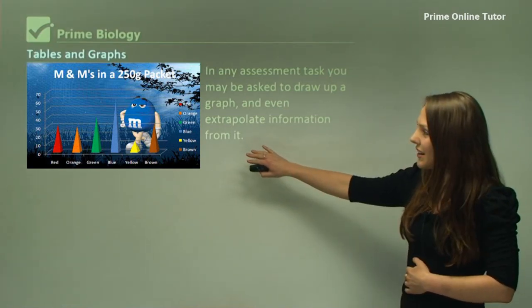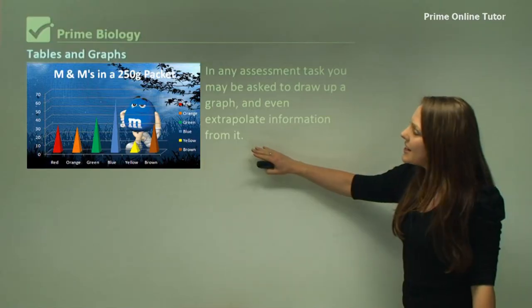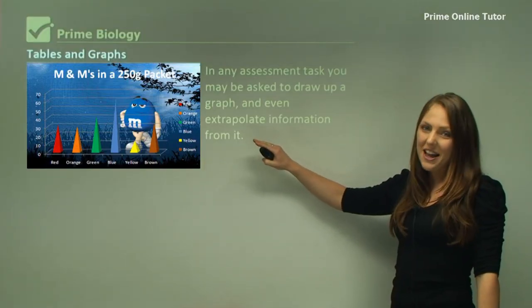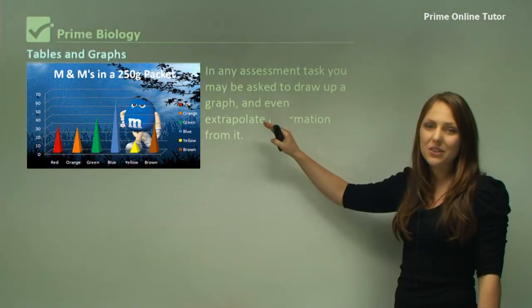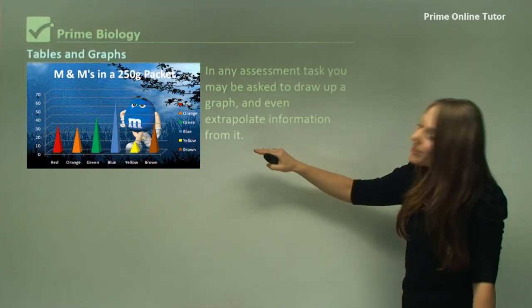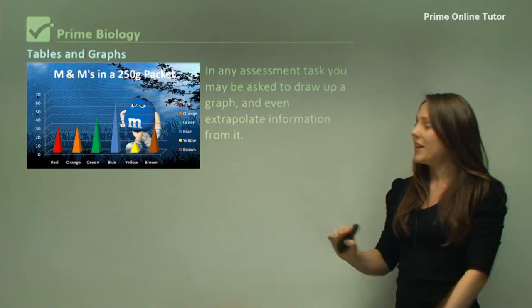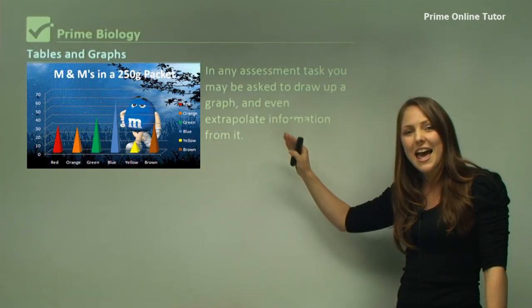As a little bit of a play, I've got this M&Ms in a 250 gram packet graph. You can see here that the blue M&Ms seem to be the most common in the packet, however the yellow tends to be the least, or there's less of them in the packet. It's important to understand how to get information from a graph.